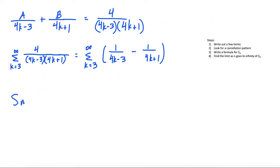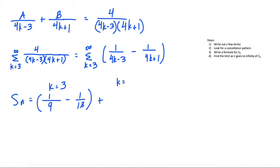The sum of the first n terms starting at k equals 3: at k equals 3, we get 1 over (4·3 minus 3) = 1/9, minus 1 over (4·3 plus 1) = 1/13. At k equals 4, we get 1 over (4·4 minus 3) = 1/13. Notice right away this last term is being cancelled by the first term of the next group. So we can start to see the cancellation pattern already.